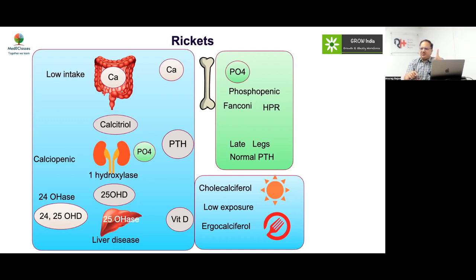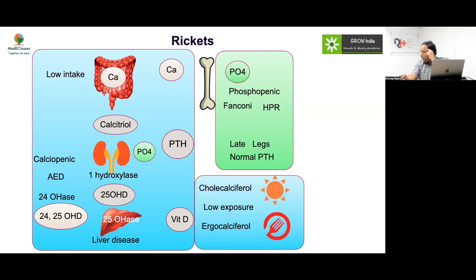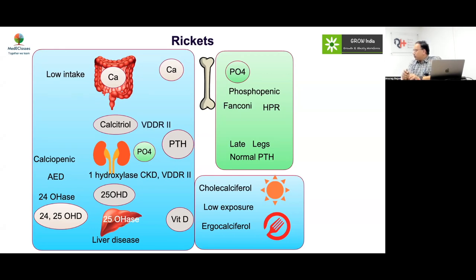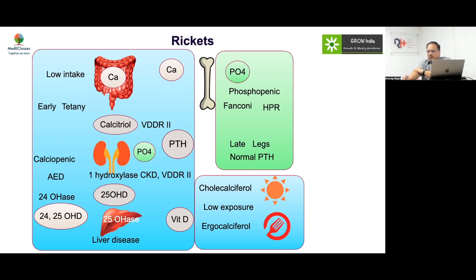If a child has liver disease with rickets, consider two possibilities: malabsorption or tyrosinemia/cystinosis, where liver damage has occurred. Anti-epileptic drugs like phenytoin and phenobarbitone cause inactivation of vitamin D, causing rickets. Problems with one-alpha hydroxylase — as in chronic kidney disease or VDDR — will also impair calcitriol synthesis, as will resistance to calcitriol action.